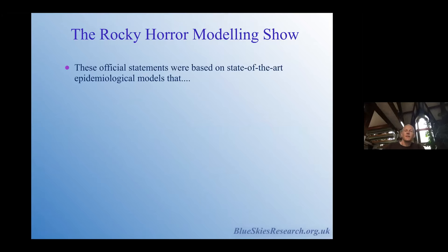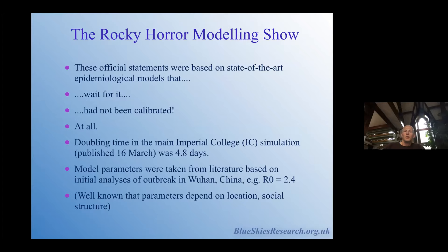I looked into why experts came out with these statements. It turns out that official statements were based on state-of-the-art epidemiological models that had simply not been calibrated at all — they'd just taken the model, stuck in parameters from the literature, and run it. The most famous simulation published on the 16th of March had a doubling time of 4.8 days. The R₀ parameter of 2.4 was taken from the very early outbreak in China that had gotten into peer-reviewed literature, even though parameters depend greatly on location, social structure, and environment — and parameters for China aren't necessarily relevant to Bristol.